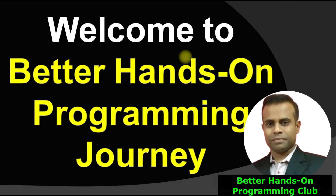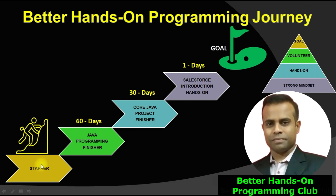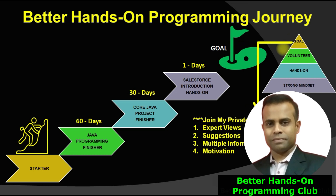Welcome to the Better Hands-On Programming Journey. This is your next three months journey blueprint. You are on the starter phase. In the next 60 days, you have to complete Java programming — a finish challenge. After that, you have 30 days to complete your core Java project — another finish challenge. Once complete, I will also provide you with a Salesforce introductions hands-on — a recorded full-day workshop-type session. To complete this journey, you need a strong mindset, you have to perform multiple hands-on programming, volunteer a minimum of three friends, and finally achieve your goal.